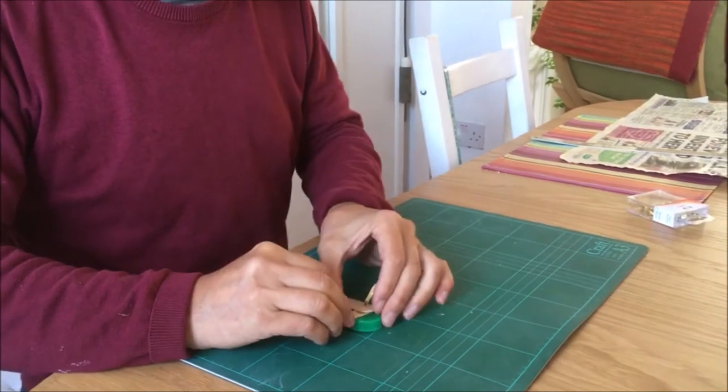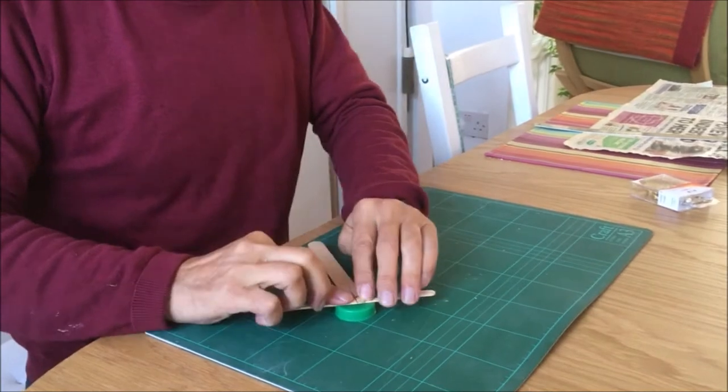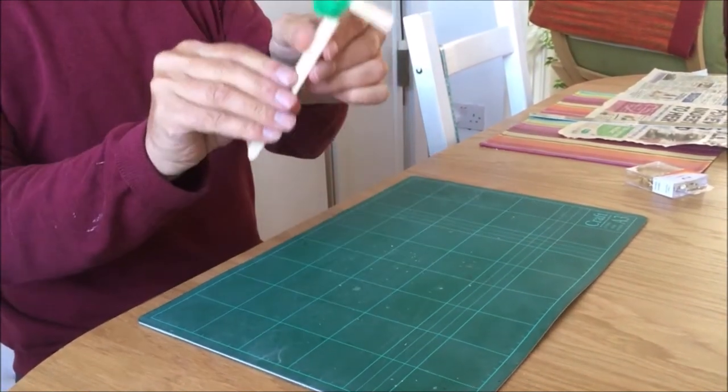Once you push it through, pull down the two sides of the split pin and get that nice and tight. You can use a hot melt glue gun for this.